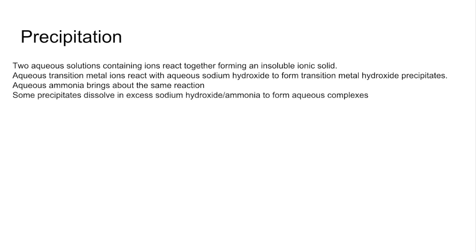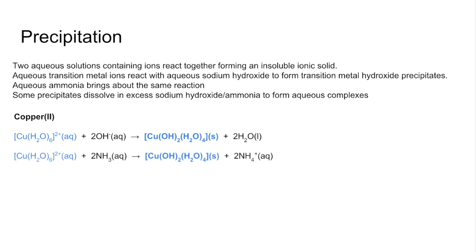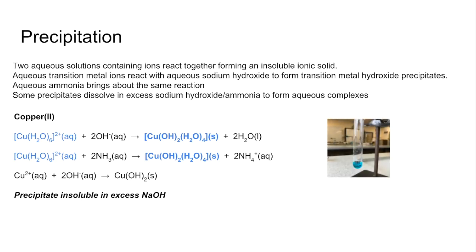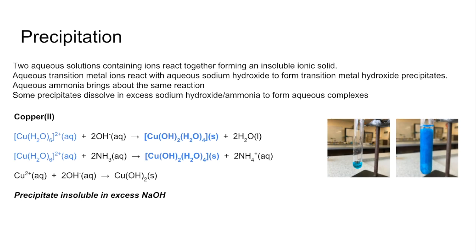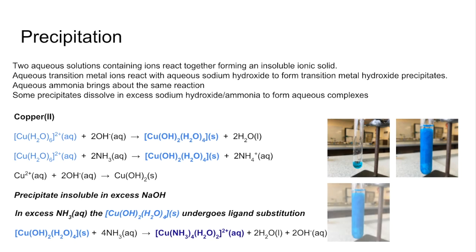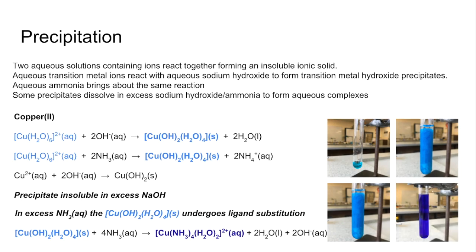Starting with copper 2+: the hexa aqua copper 2+ reacts with two hydroxide ions to form a copper 2 hydroxide precipitate. Aqueous ammonia initially brings about the same product. The precipitate is insoluble in excess sodium hydroxide. You start with a blue solution and get a blue precipitate. If you add excess ammonia to the precipitate, it dissolves and undergoes ligand substitution, going from a pale blue precipitate to a deep blue solution.